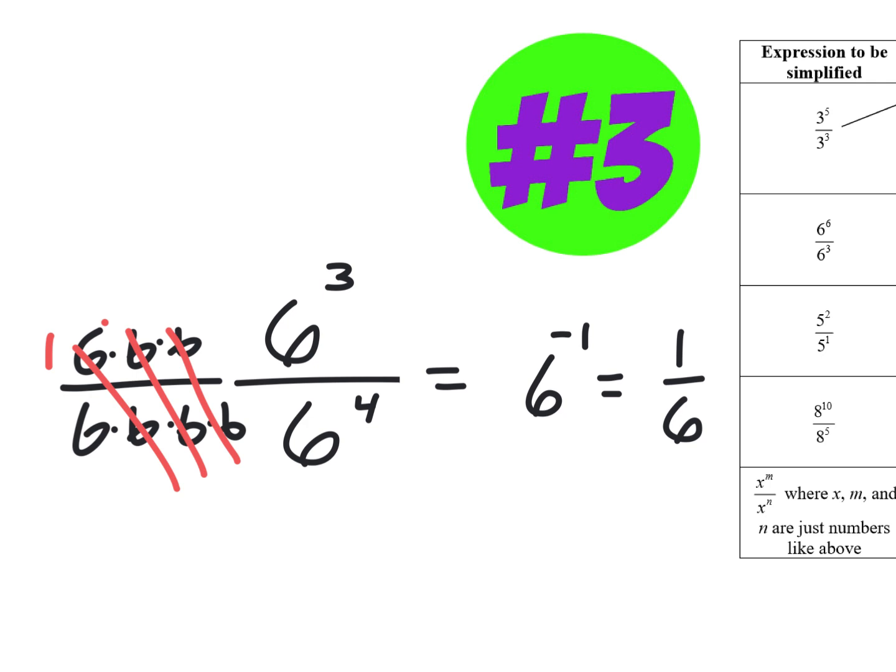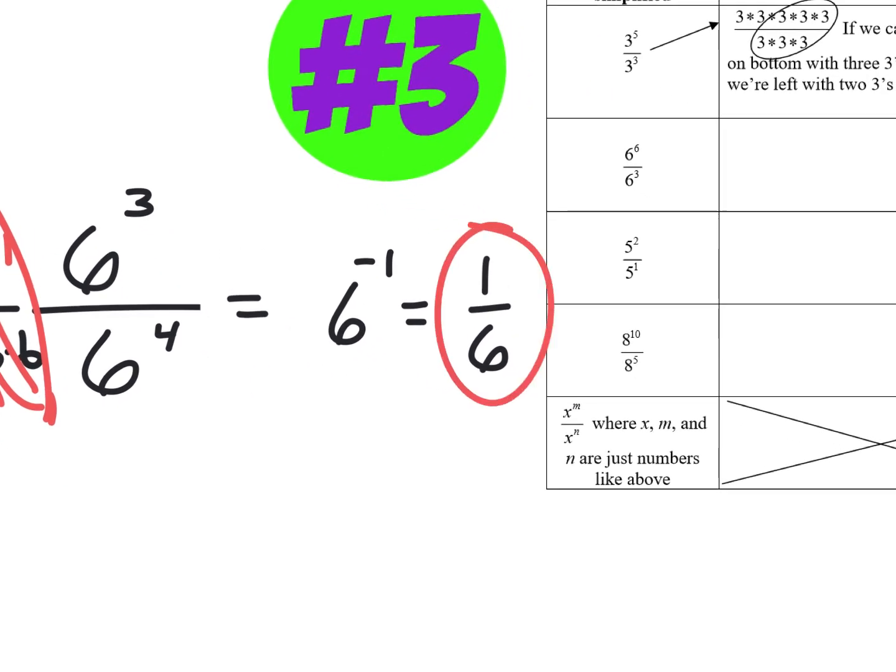Really what happened is as you canceled all of those, they all had a one. They were all reducing to one. And technically, highest level math teachers don't like the word cancel. They liked you to say reduce because you're reducing this to one over one. That's what you're really doing is reducing it, not canceling it. So anyway, final answer for that one is like that.